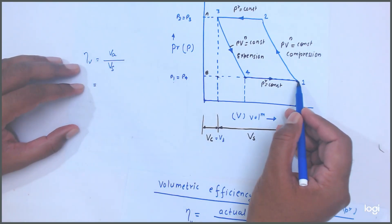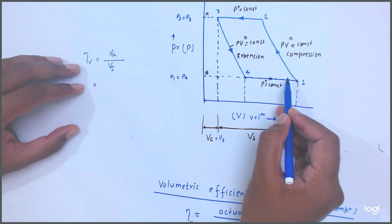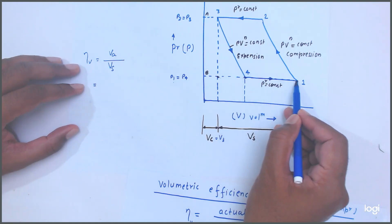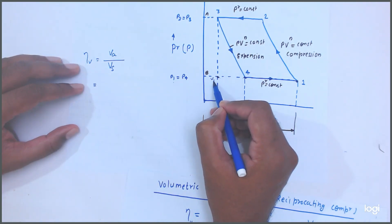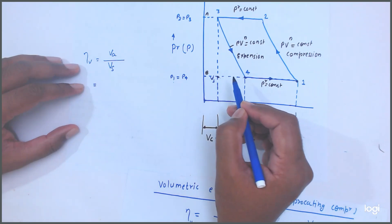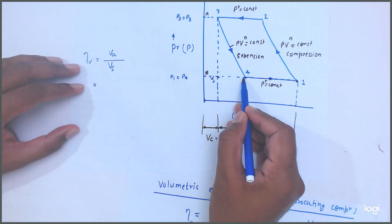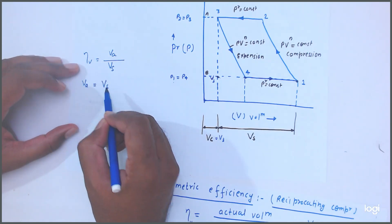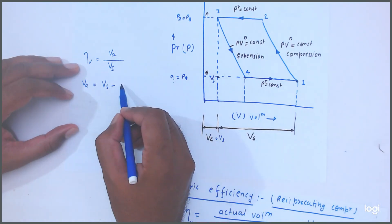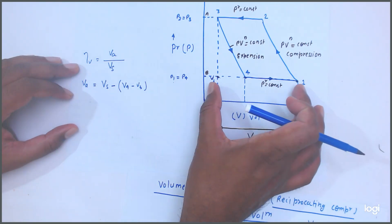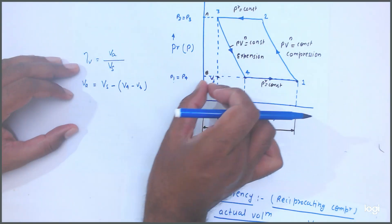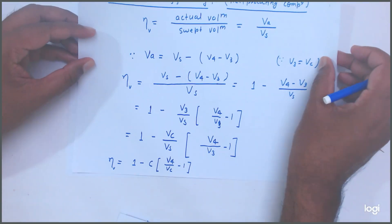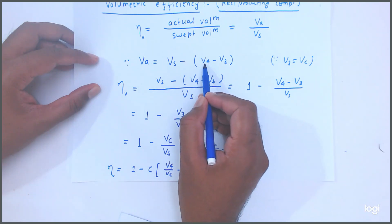We can write that the total volume V — if this is the stroke volume and we subtract from it the expanded clearance volume, we get the actual volume. So actual volume = stroke volume minus (V4 minus V3). This is the actual volume: V1 minus V4 equals stroke volume minus (V4 minus V3).